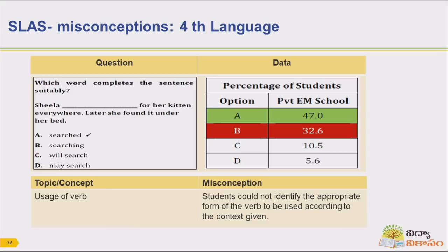Let me give some examples I have picked from SLAS in fourth grade language. Here, the question is: which word completes the sentence suitably? On the right side, they have given data — the green answer is correct. 47% of the students answered it correctly, while 32.6% of students got it wrong and chose option B.